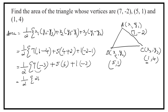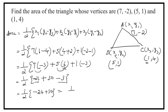That is equal to half into 7 times minus 3 is minus 21, plus 5 times 6 that is 30, plus 1 times minus 3 that is minus 3. That is equal to half into minus 21 plus 30 minus 3, which is half into 6. So, area of the triangle is equal to 3 square units.